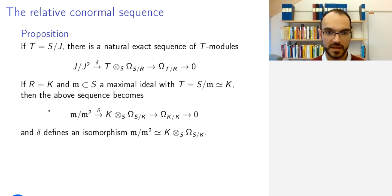Then the sequence here becomes this following sequence, and this thing is going to be 0, because I have K over K, because both T and R are K. So this means that delta is surjective, and in fact, one can show that it is injective as well.